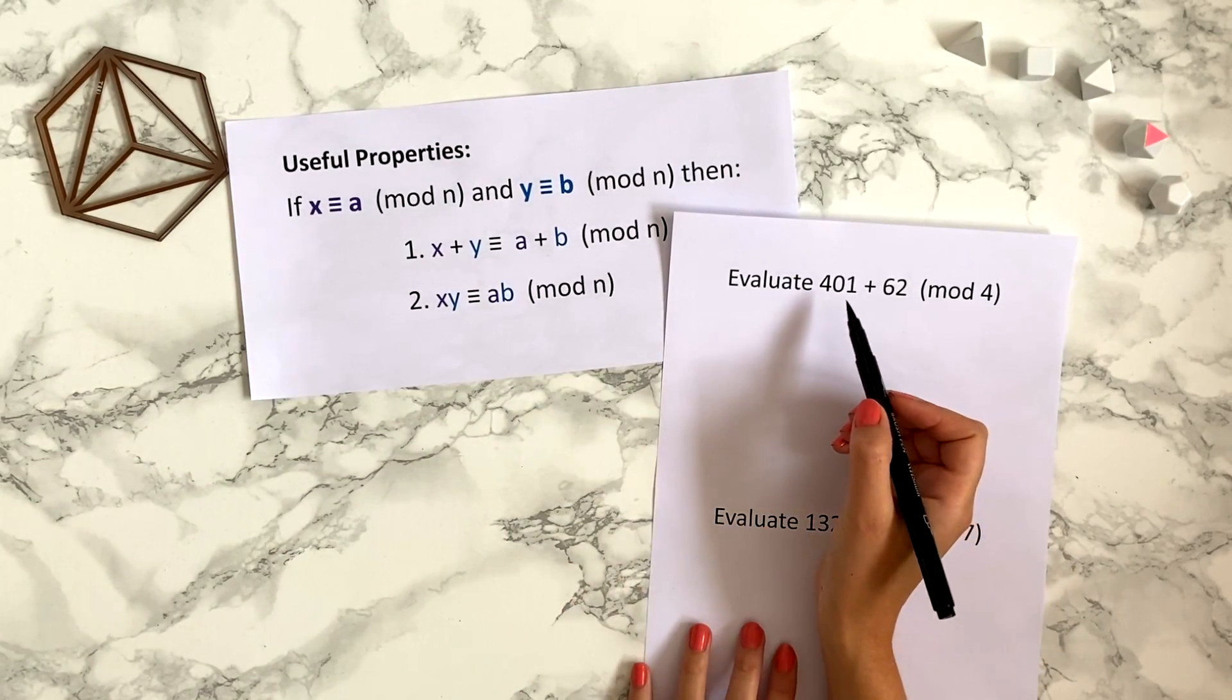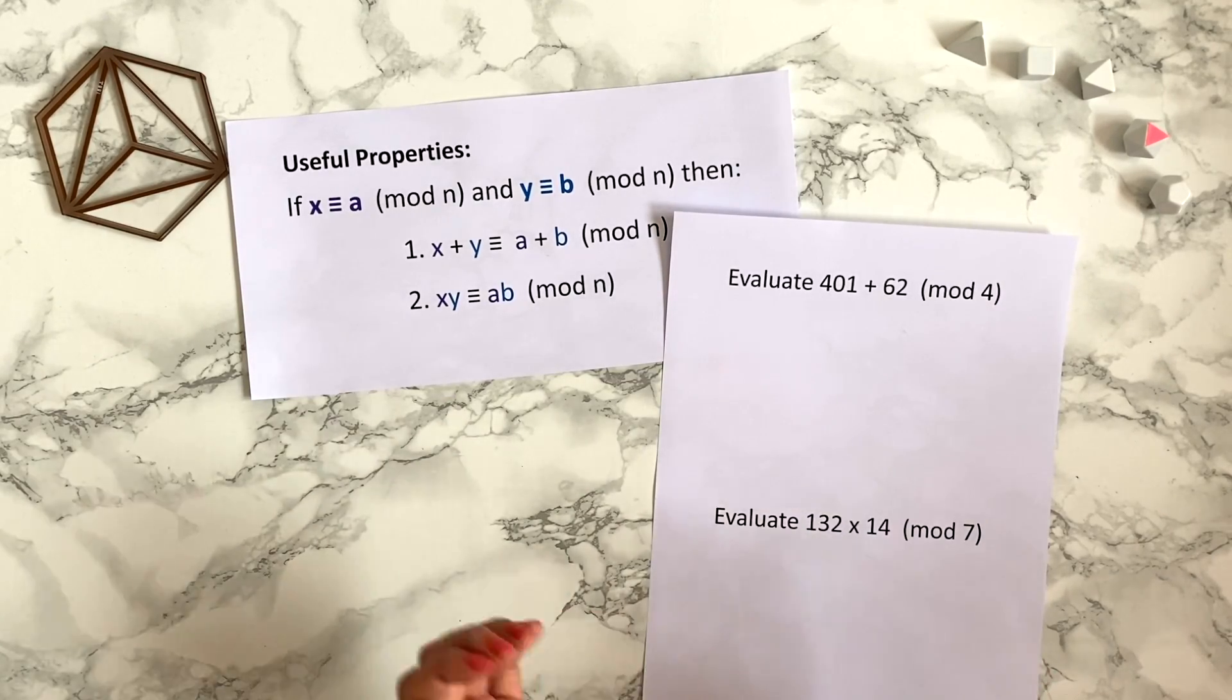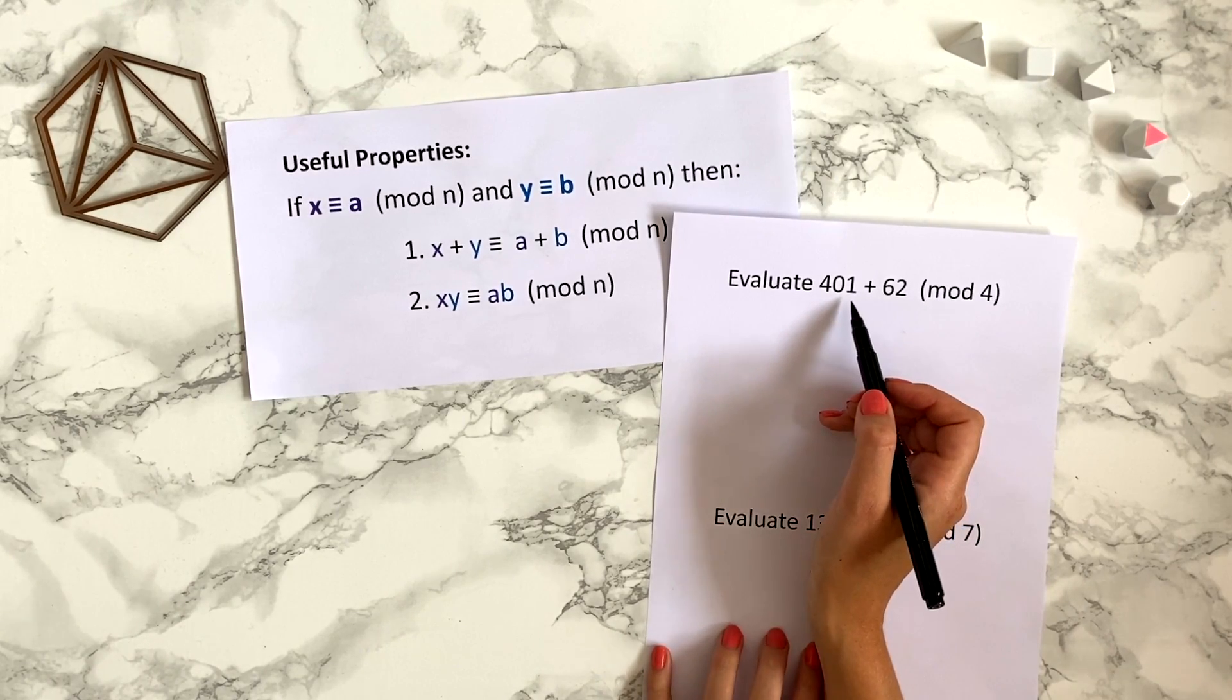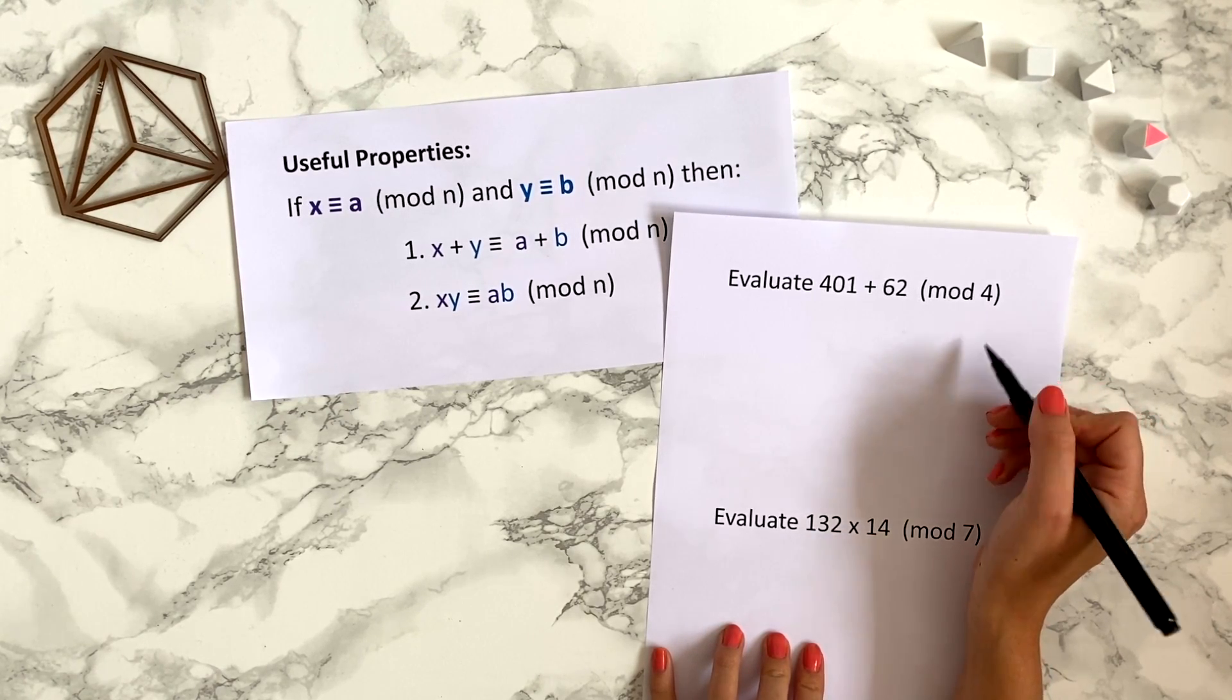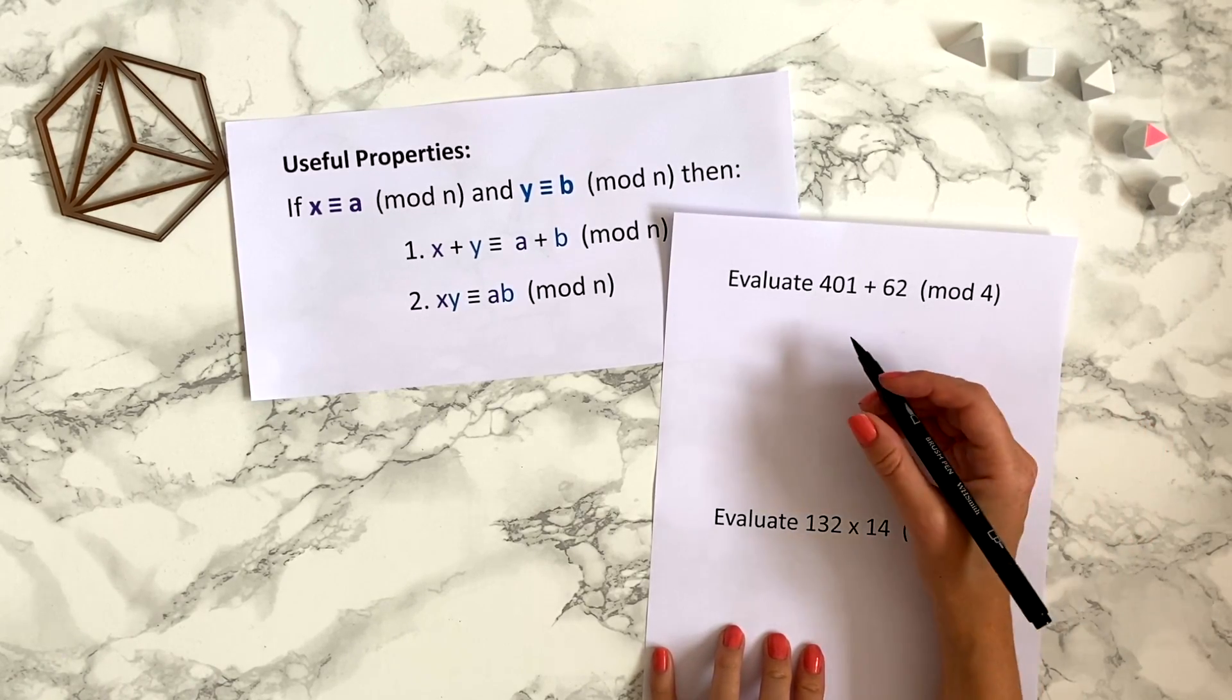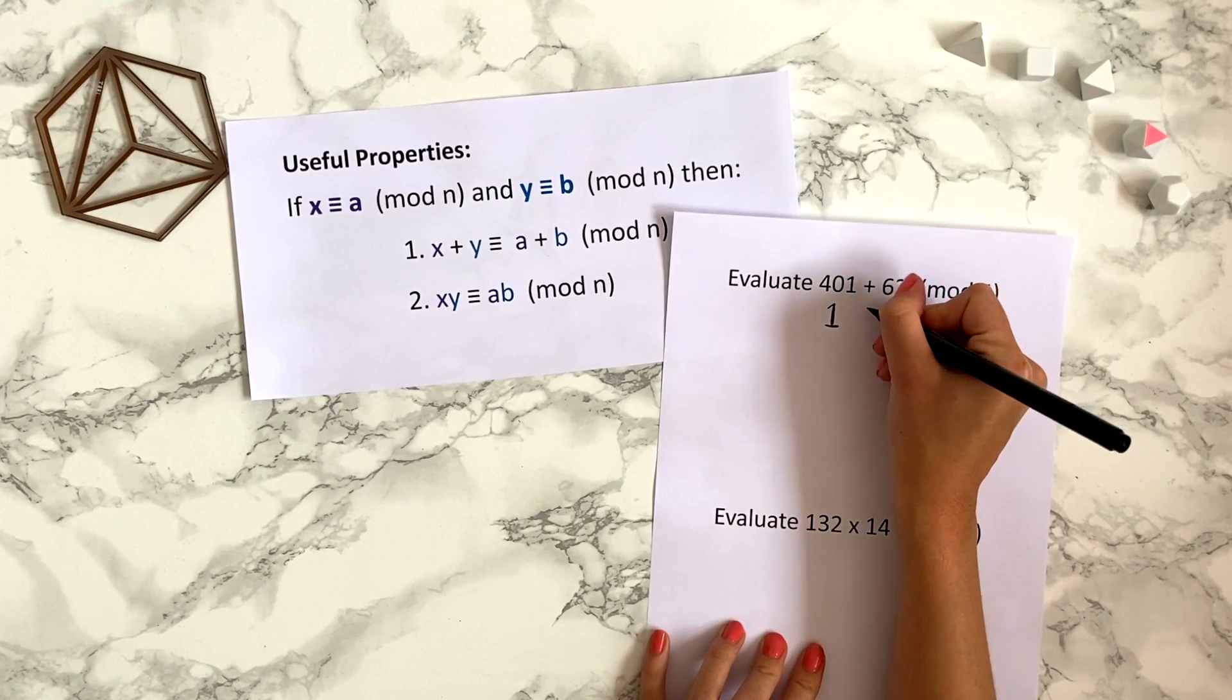this theorem tells us we can work out what each of these smaller numbers is modulo 4 and then add those things together. So 401 modulo 4, well 400 is divisible by 4 so it would be at the top of a four hour clock. To get to 401 we just need to go one around, so 401 is congruent to 1 modulo 4.